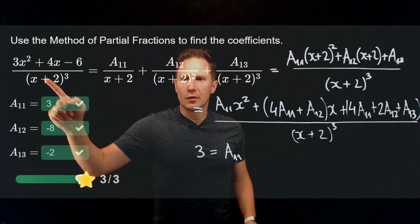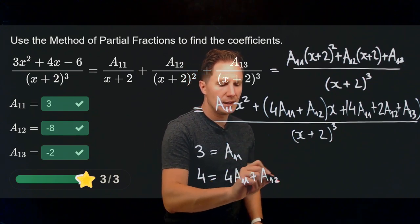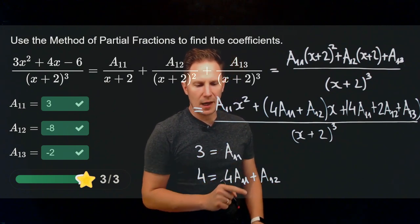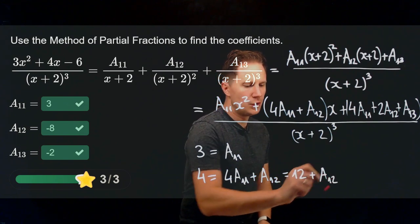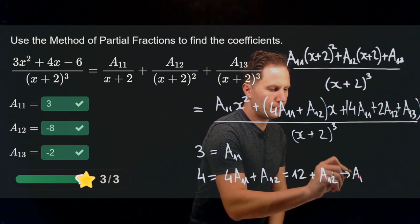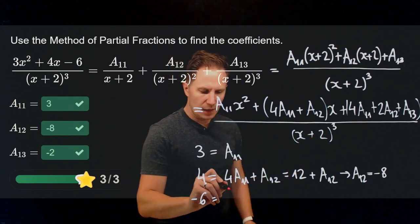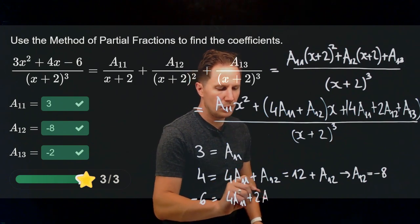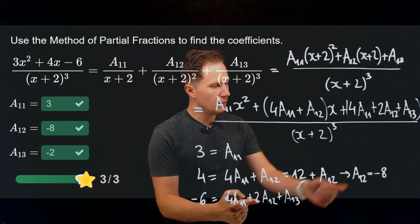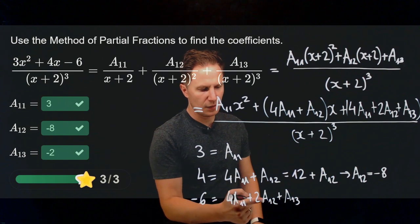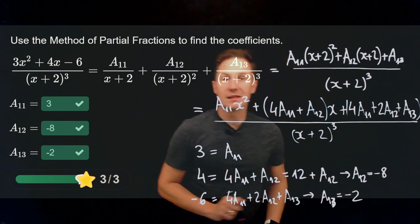Matching coefficients of powers of x on both sides: the coefficient of x squared gives a11 directly, so a11 equals 3. The coefficient of x is 4 on the left and 4 times a11 plus a12 on the right; since 4 times a11 is 12, a12 must equal 4 minus 12, which is negative 8. For the constant terms, negative 6 on the left equals 4 times a11 plus 2 times a12 plus a13, giving 12 minus 16 plus a13, so a13 equals negative 2.